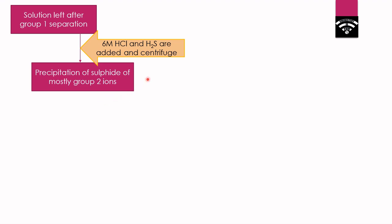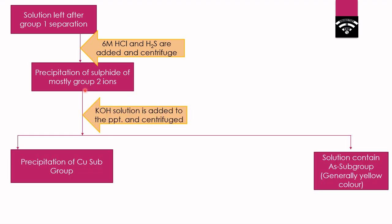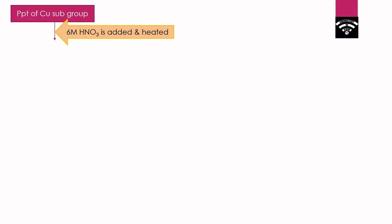We separate the precipitate by centrifugation and add KOH solution to it, then centrifuge again. Copper subgroup sulfides cannot dissolve in KOH and remain as precipitate, while arsenic subgroup sulfides dissolve into the KOH solution. By centrifuging, we separate the two groups into different test tubes. For the copper subgroup precipitate, we add 6 molar HNO3 and heat it, since copper subgroup sulfides dissolve in 6 molar HNO3.